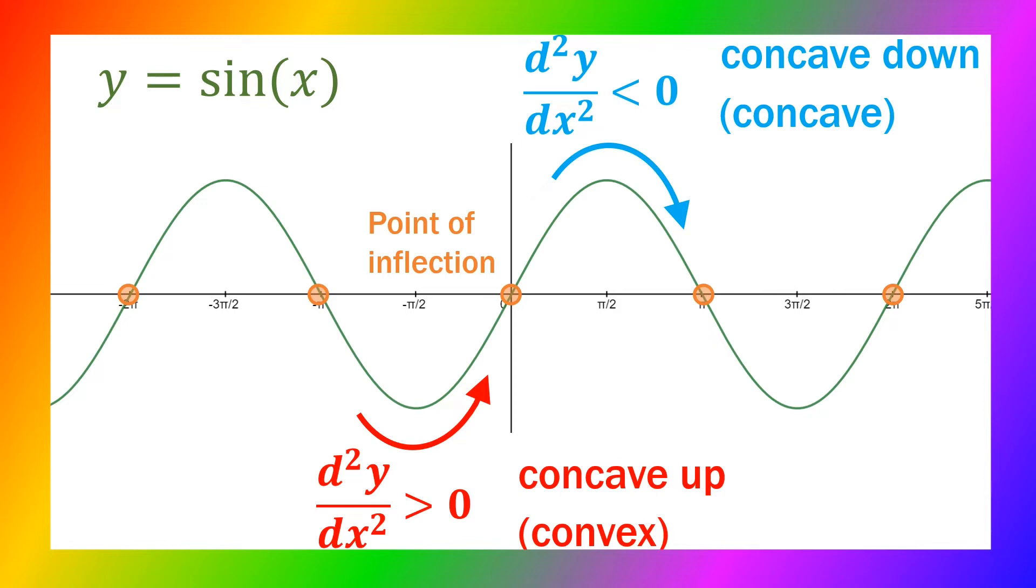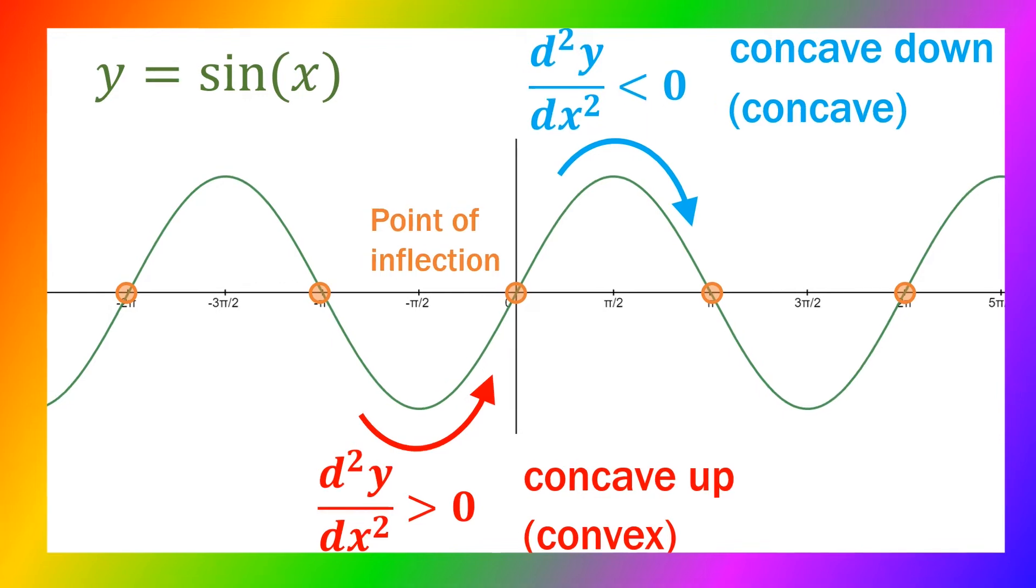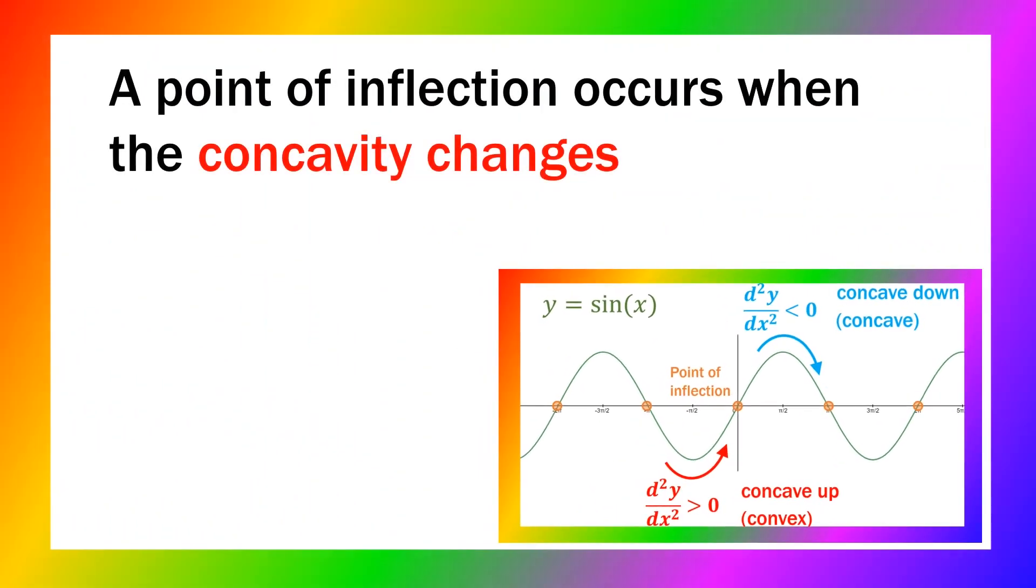I prefer the terms concave up and concave down because I get confused between convex and concave. Either way, you can look at the sign of a second derivative. Whenever the concavity changes, that's when we have a point of inflection.